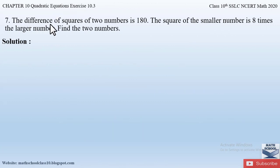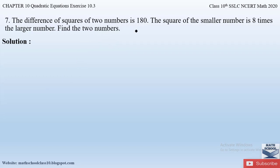The question says: the difference of squares of two numbers is 180; the square of the smaller number is 8 times the larger number. So we have two numbers — one smaller and one larger — and we need to find those two numbers where the square of the smaller number is 8 times the larger number.